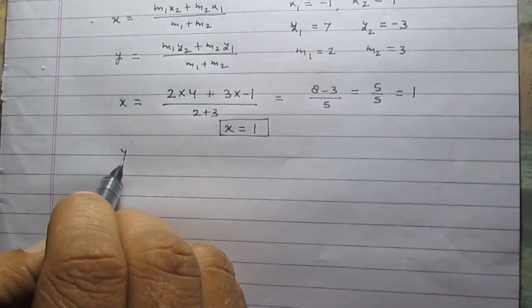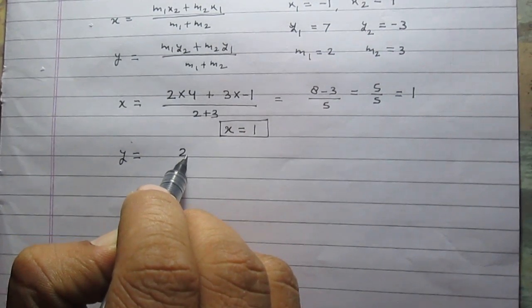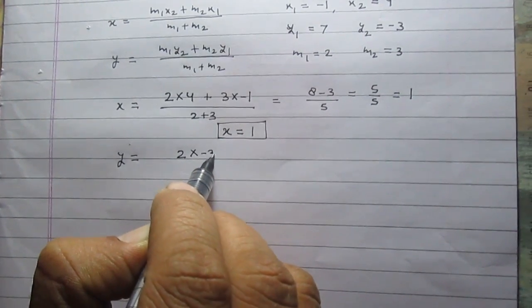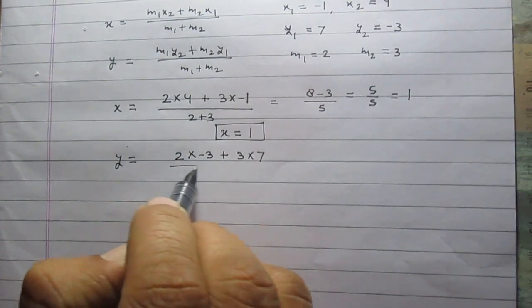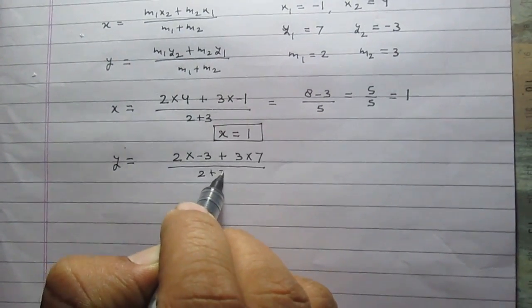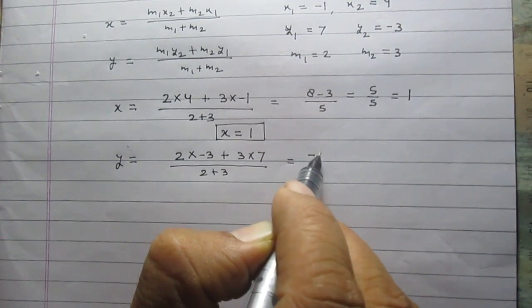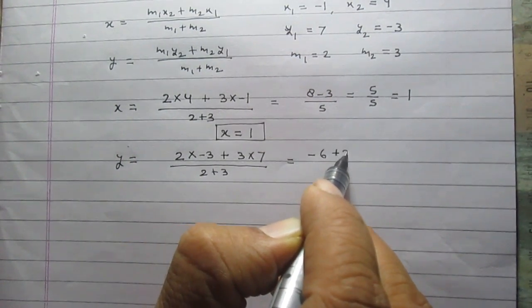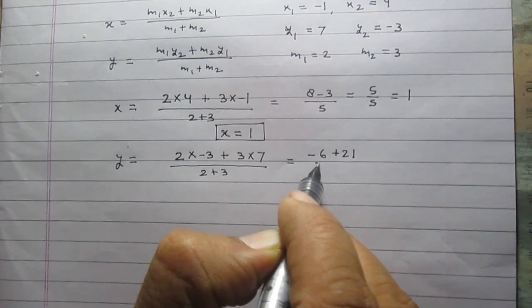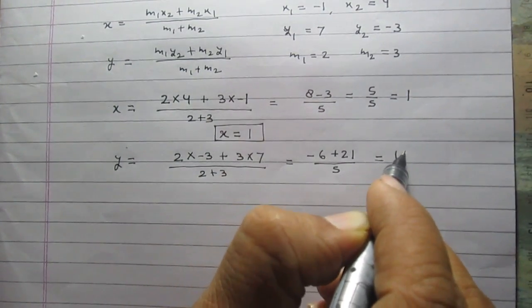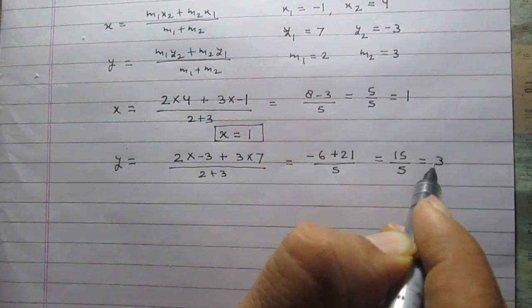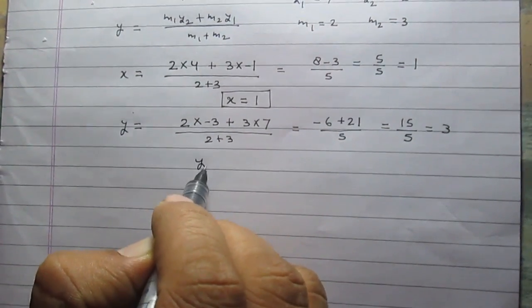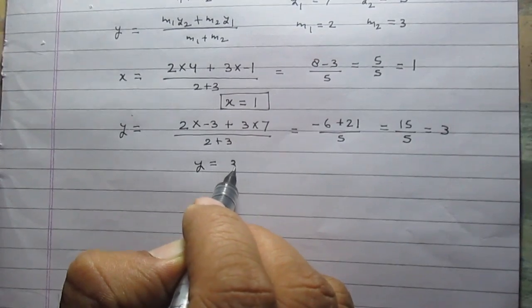Similarly, y = (2×(-3) + 3×7)/(2+3). It is -6 + 21 divided by 5, and it is equal to 15 divided by 5, so it is equal to 3. So value of y-coordinate of point P is equal to 3.